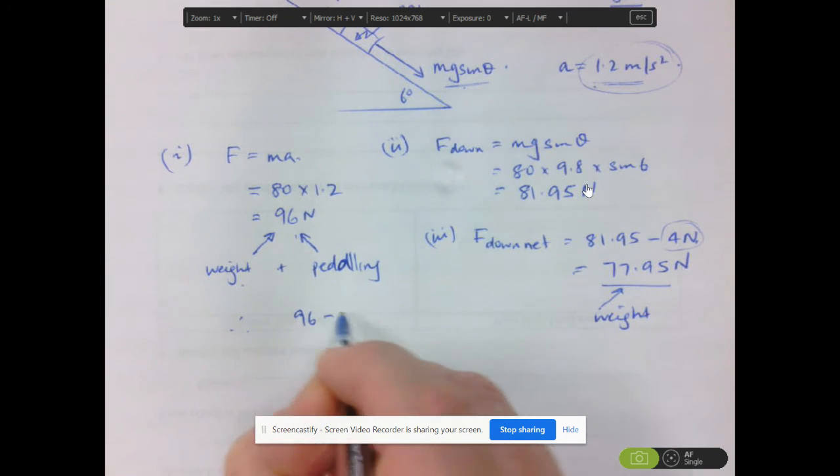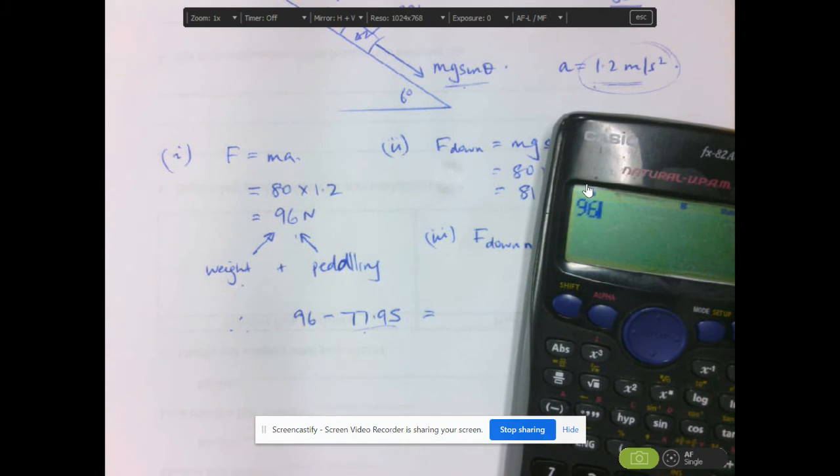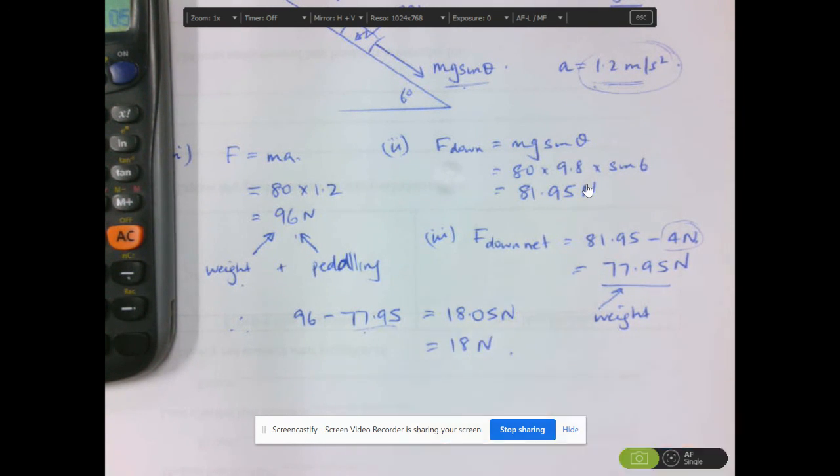That includes gravity and friction. So calculating that, so it's 96 minus 77.95, and we get 18.05 newtons. So it's 18 newtons that he needs to supply. We're rounding that to the nearest newton.